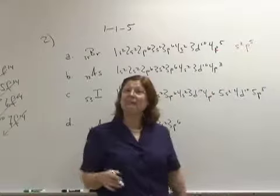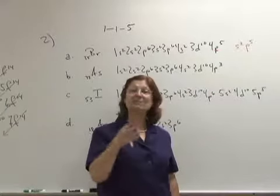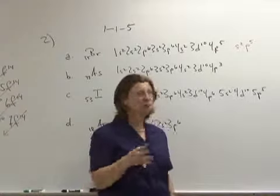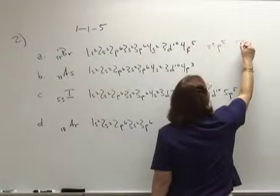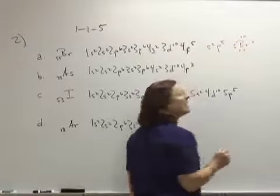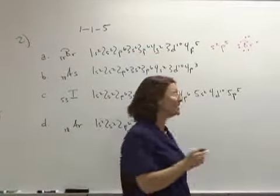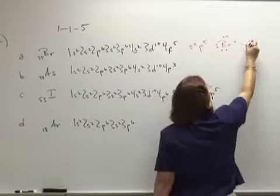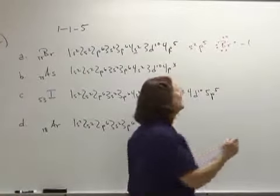Then I know how many dots it will have. The s and the p as in Paul electrons. 2 plus 5 is 7. And therefore, bromine has 7 dots. Its oxidation number is minus 1 or negative 1. And it is a non-metal.